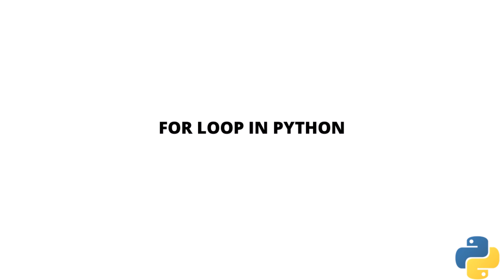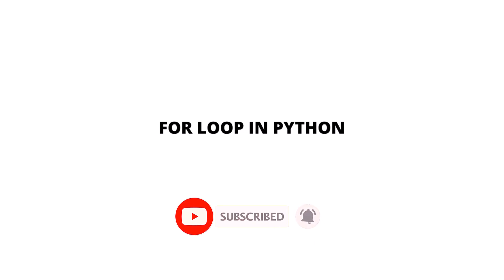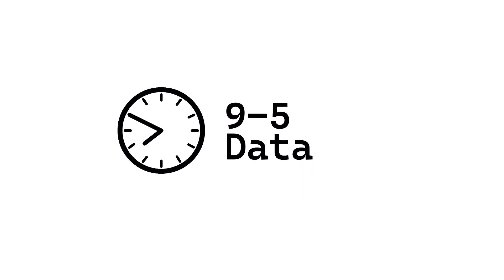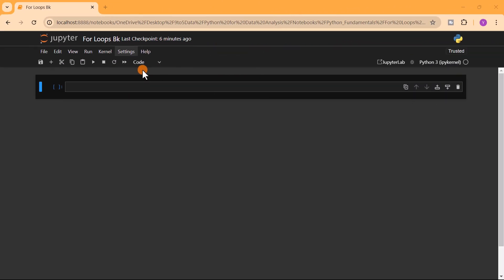Before we start coding, don't forget to like this video and subscribe to the channel. Let's code — nine to five data. Let's start by looking at a simple example of iterating over a list using a for loop.